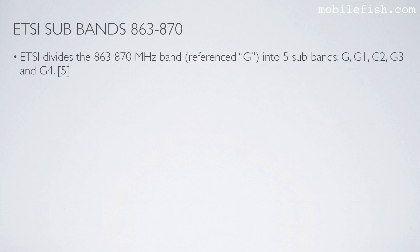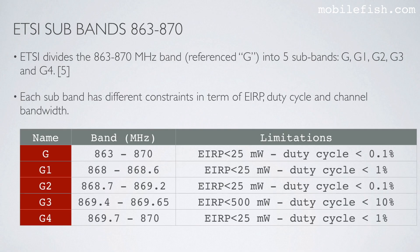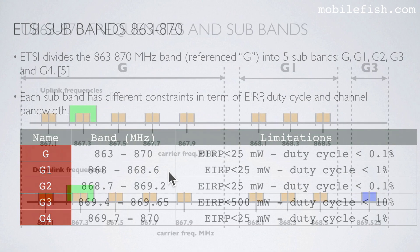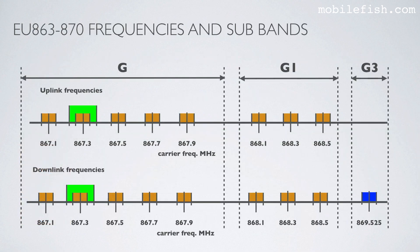ETSI divides the 863 to 870 MHz band into 5 subbands named G, G1, G2, G3, and G4. Each subband has different constraints in terms of EIRP, duty cycle, and channel bandwidth. For example, subband G1 represents a specific frequency band with its own limitations. In this picture the subbands are mapped on the Things Network EU863-870 frequency plan — for example, subband G1 has an EIRP limited to 25 mW and a duty cycle of 1%, and these limitations apply to three specific frequencies.